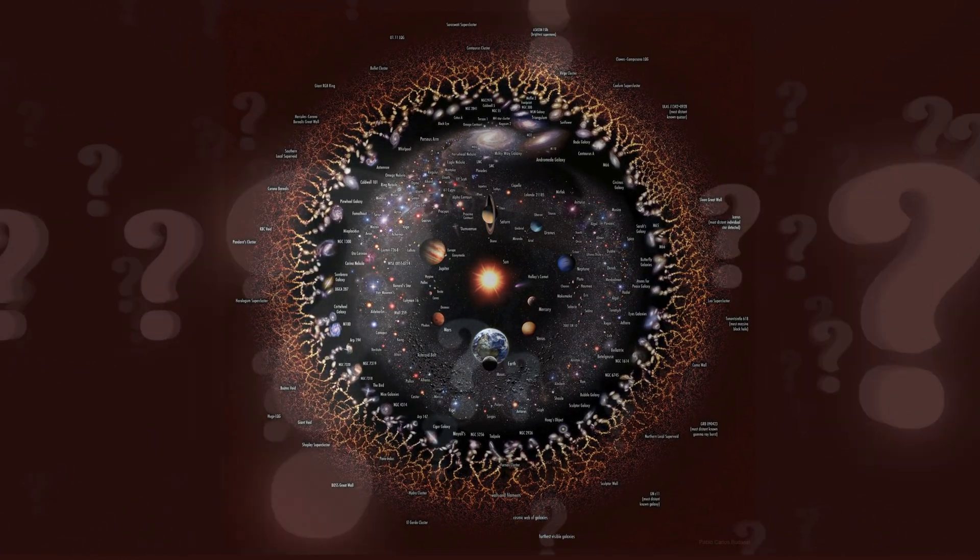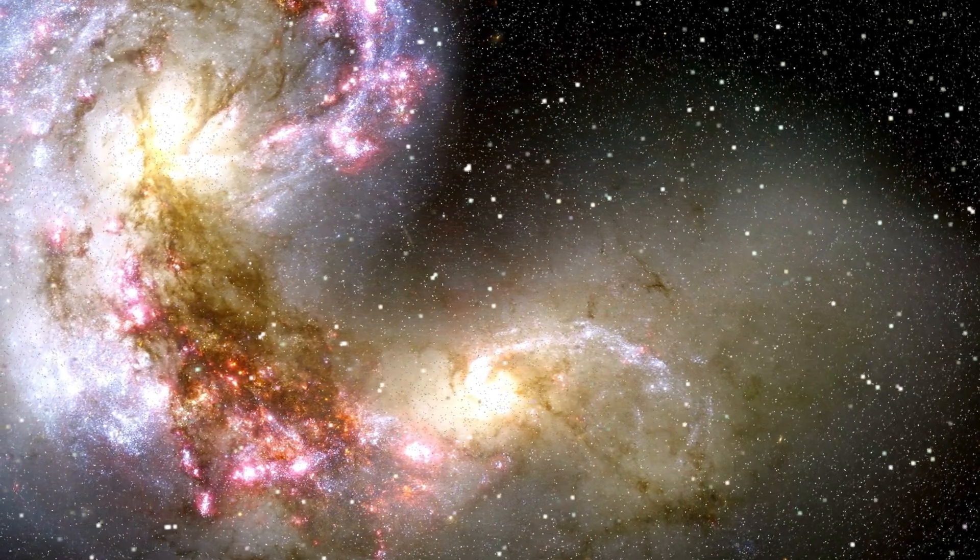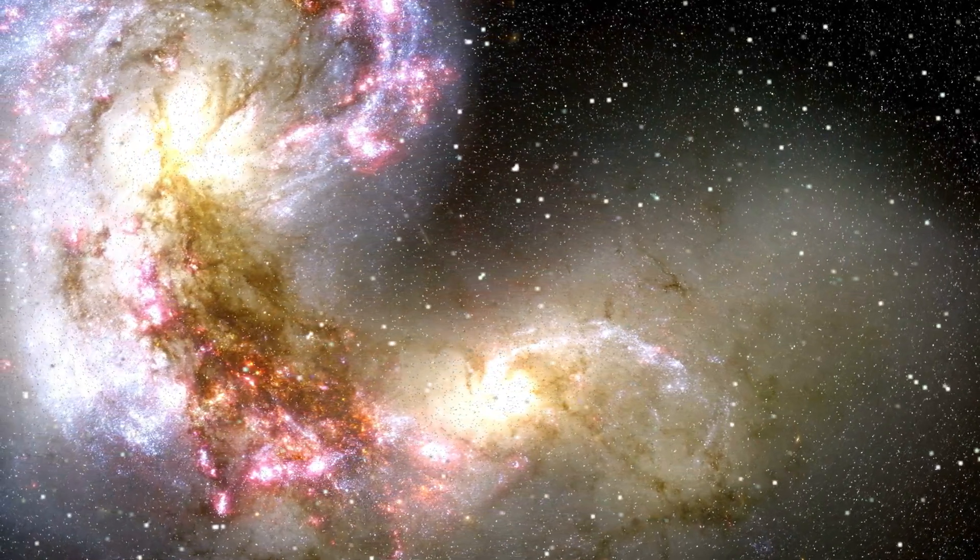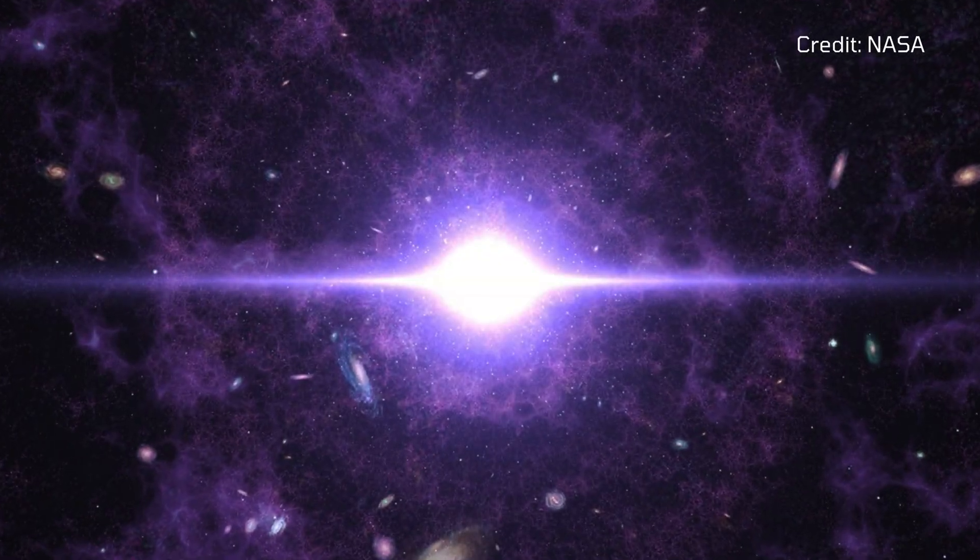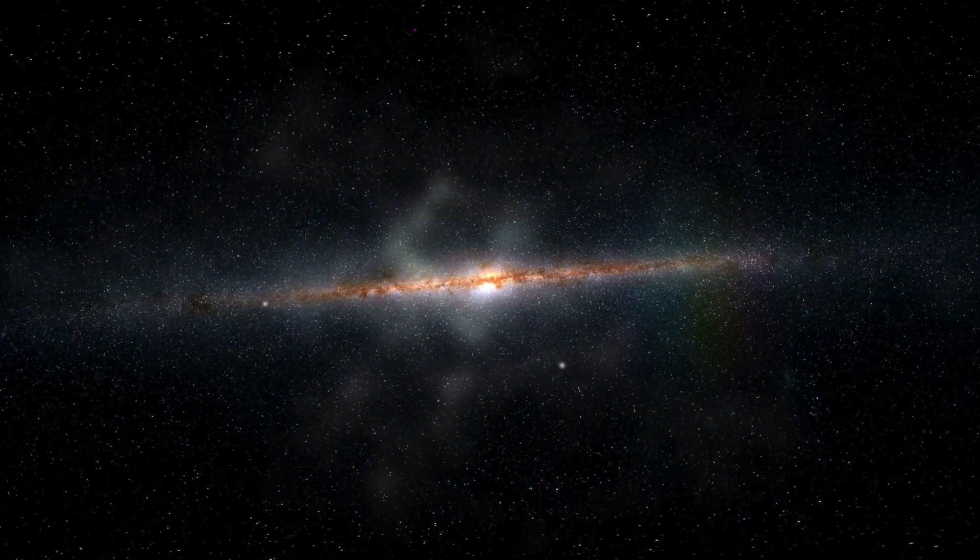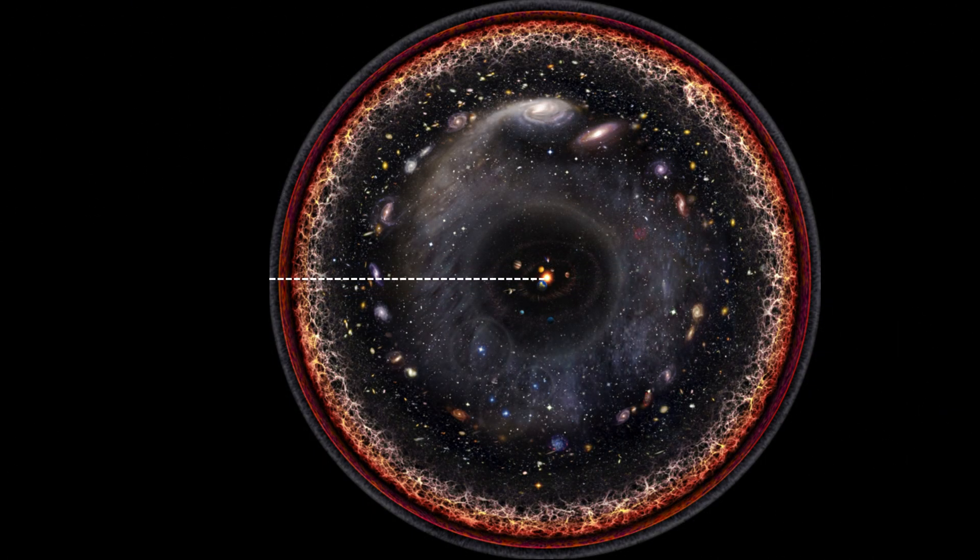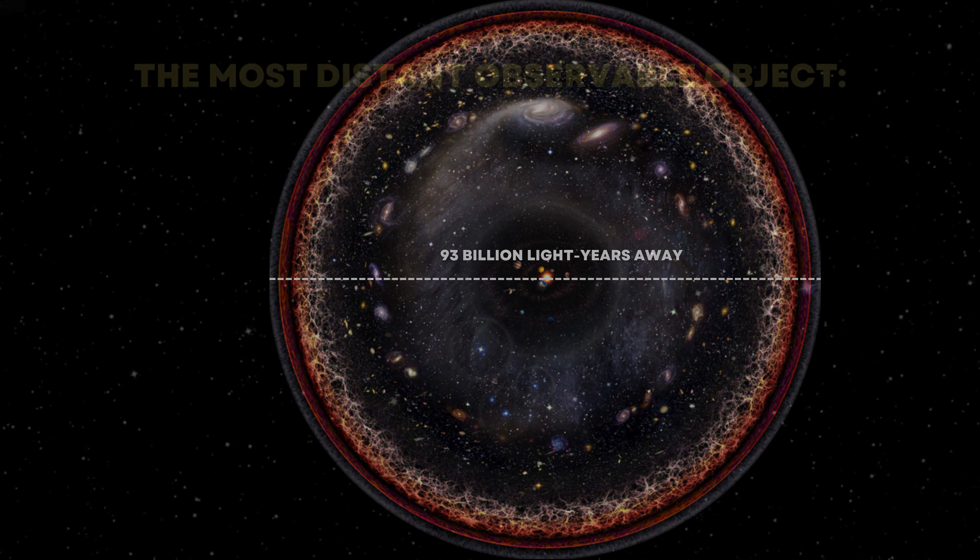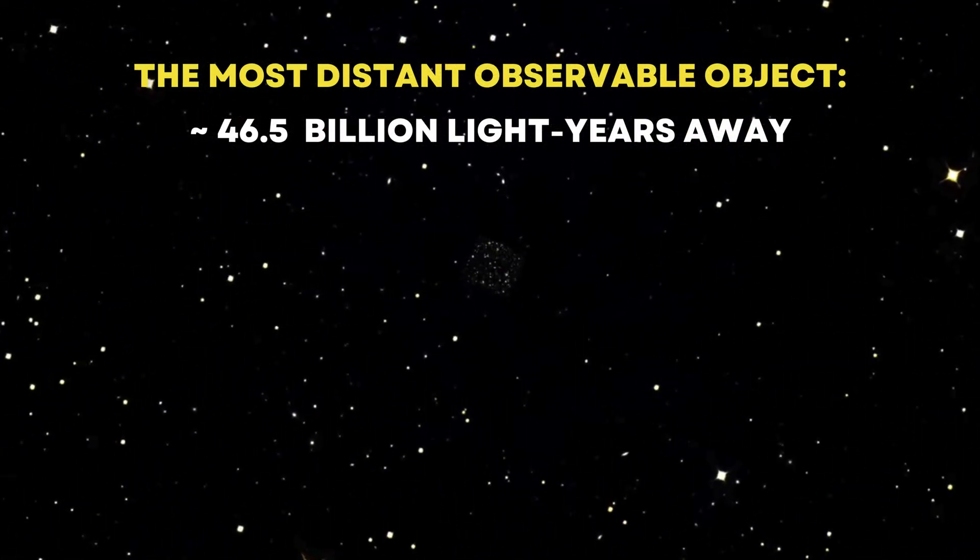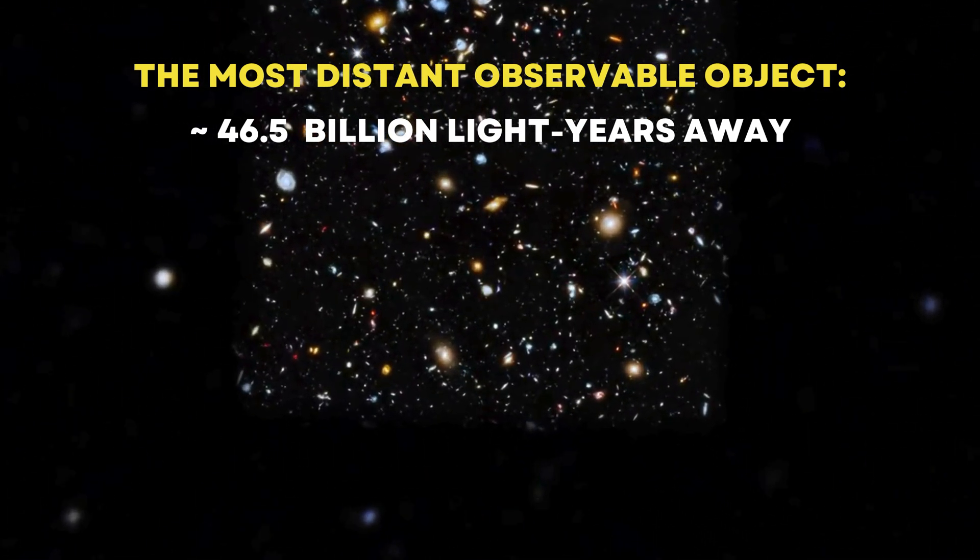But what lies at the edge of the observable universe? The observable universe is that portion of the space from which light has had time to traverse since the Big Bang. The universe lies beyond this limit. Light hasn't had enough time to travel to us yet. At present, it is assumed that the observable area of the universe measures nearly 93 billion light years in diameter. As a result, the farthest objects we can see are about 46.5 billion light years away from us, in every direction.